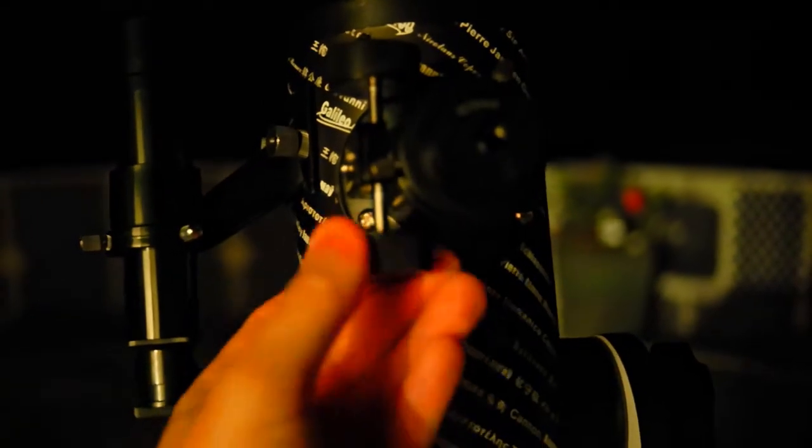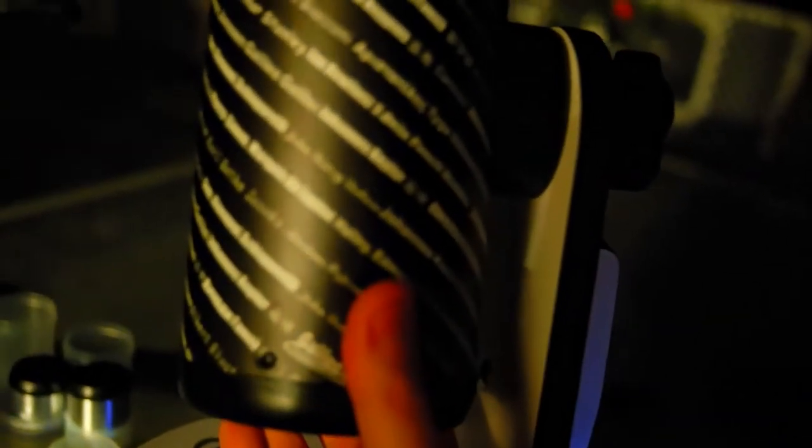Over here you have the knob for altitude. You see that it just moves a little bit, and that means I can then hand move the scope very easily. If you tighten it down a little bit like this, the scope doesn't move at all.